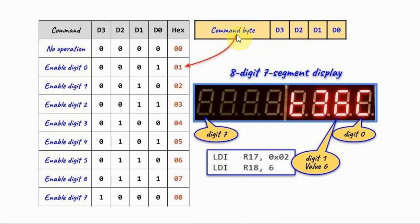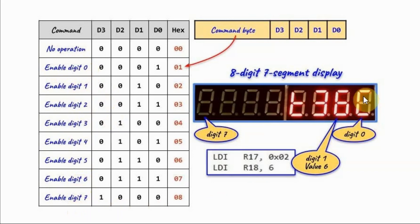On the command byte, only the least significant nibble is relevant, while the most significant nibble is a logic don't care and is assumed 0. Based on the least significant nibble, we get this truth table which determines which digit of the display is enabled — digit 0 through digit 7.